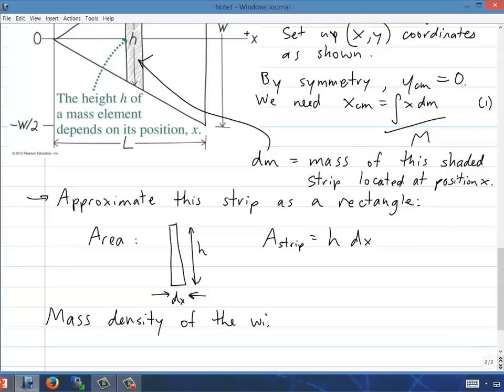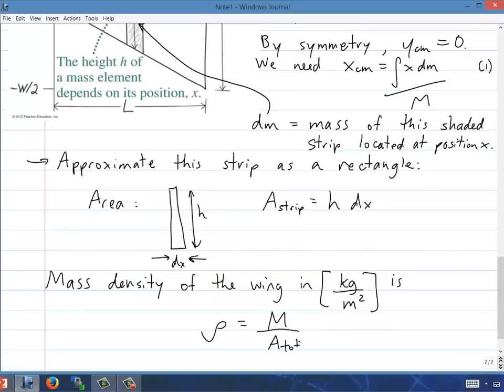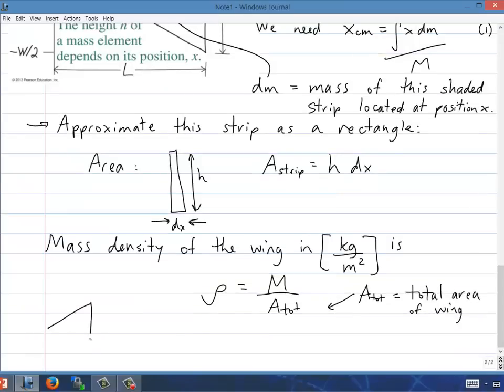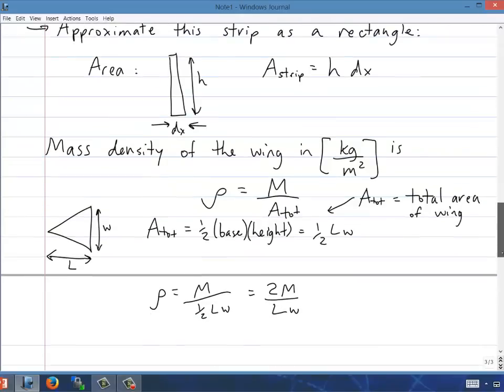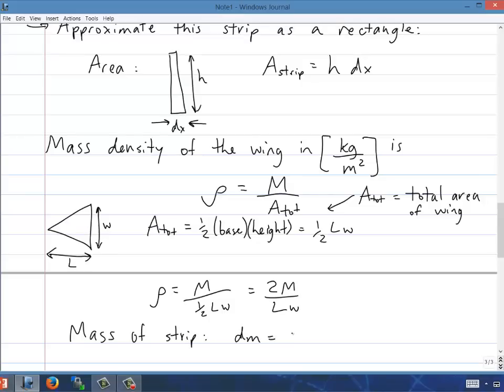The mass density of this whole wing in kilograms per meter squared, so area density, will be, we'll call it rho, the mass of the wing divided by the total area of the wing. The total area of the wing we can find from that big triangle. The wing is length L with W, so it's one-half base times height. It's going to be one-half times L times W. So rho there, the density of the wing is m over one-half LW, or 2m over LW. And so now we can write the area, or the mass of the strip is going to be, it's the area of the strip, hdx, times rho, 2m over LW. And we'll call that equation 2. That's the mass of the strip.